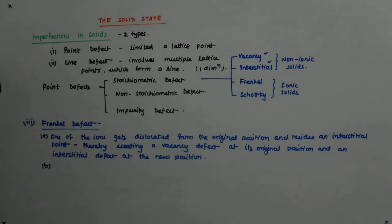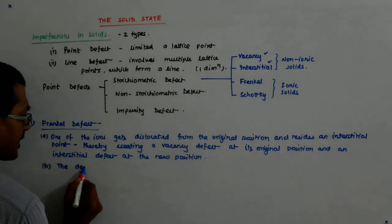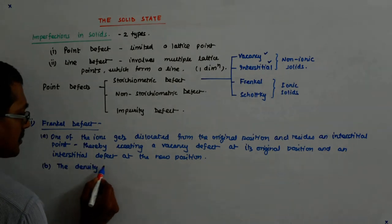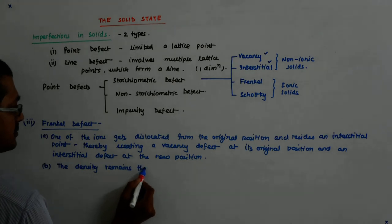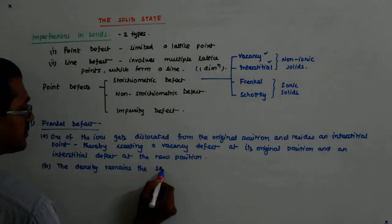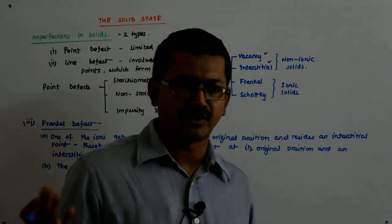So what happens to the density? Any idea? The density remains the same. Why? You are not changing anything, right? It is just a migration in between.